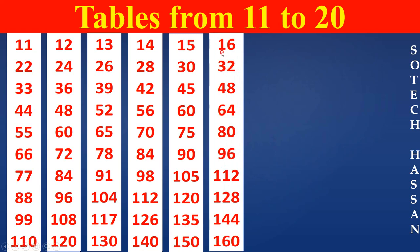16th table. 16 ones are 16. 16 twos are 32. 16 threes are 48. 16 fours are 64. 16 fives are 80.